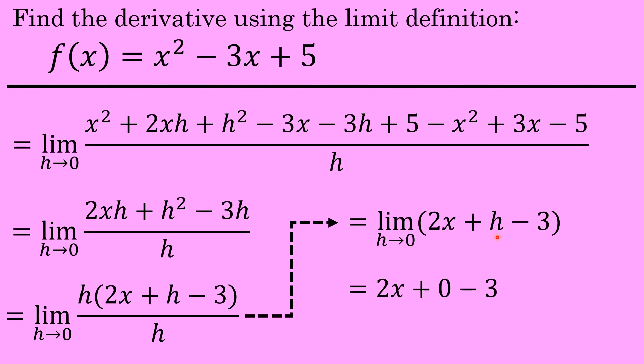Substituting a zero for h is 2x plus zero minus 3, which of course is 2x minus 3, which is the derivative of f of x. We have successfully found the derivative of f of x using the limit definition. The derivative of f of x equals 2x minus 3.